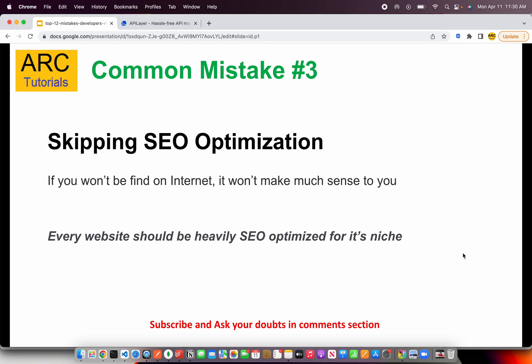Number three is skipping SEO optimization. Just because code works doesn't mean it's always good code. SEO, particularly for public pages like blogs, articles, or landing pages, must be properly implemented. A lot of developers skip this, and as a result those pages won't be found through Google search indexing. Every website should be heavily SEO optimized for its niche.